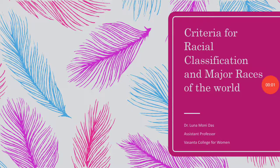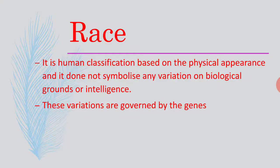Hello children. Today's topic is Criteria for Racial Classification and Understanding the Major Races of the World and Their Distribution. Races are human classifications based on physical appearance, i.e. the outer appearance of a person. It has nothing to do with biological variation or the level of intelligence. It is basically governed by the genetic assemblage.